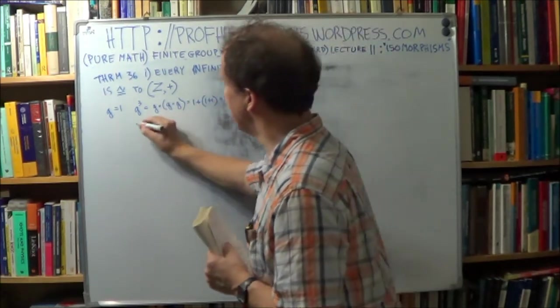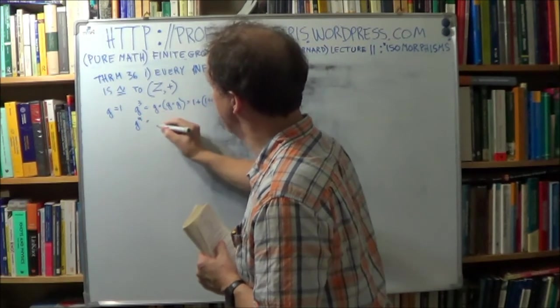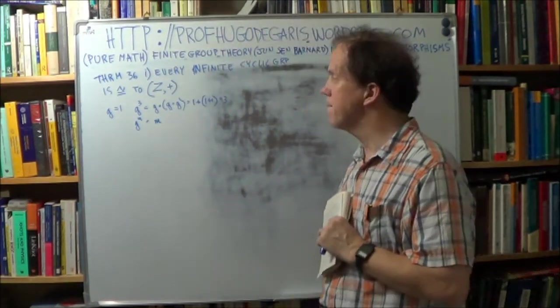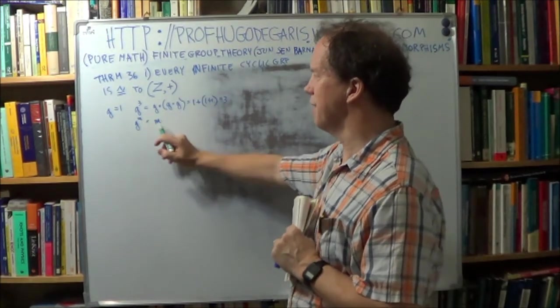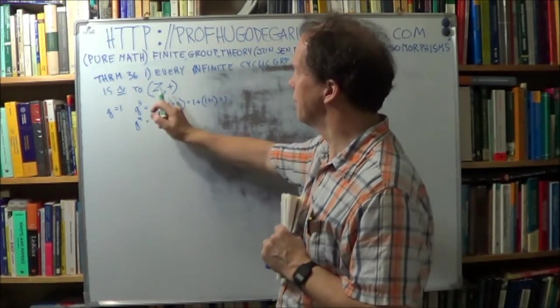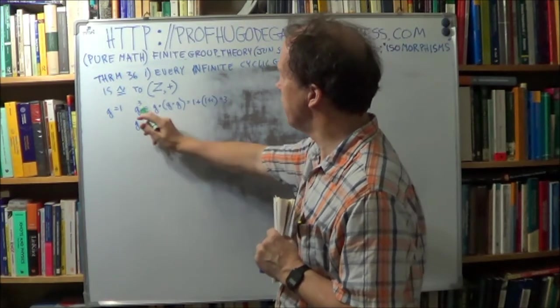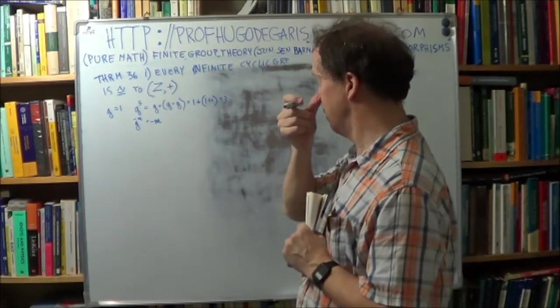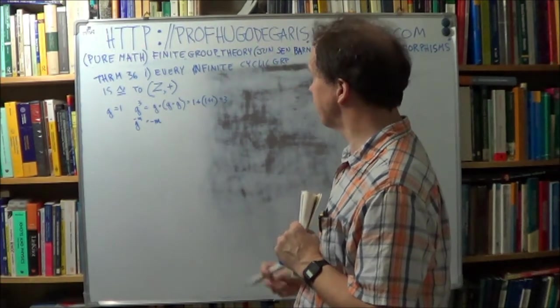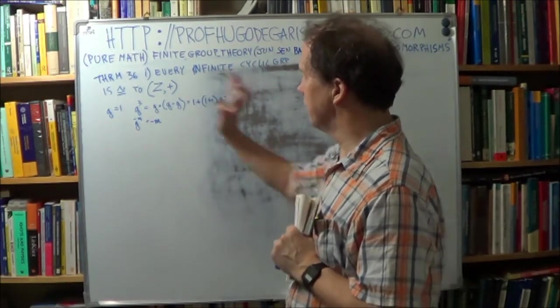So if I went g to the m, that would just give me m, okay? And I could just keep doing this forever, right? Until I get the set of integers. Now, I can go minus, I can go minus, and get a minus here.